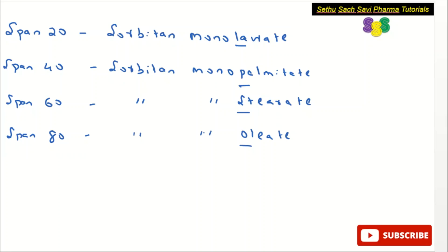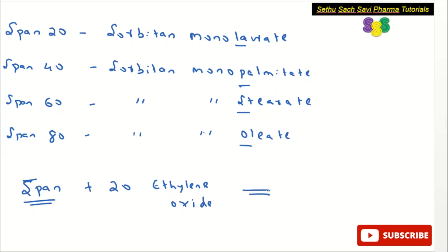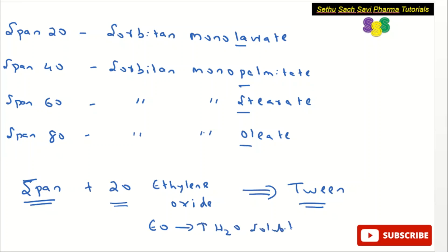Now, coming to the next non-ionic surfactant — tweens. If you add 20 molecules of ethylene oxide to the span surfactant, it will become tween. So tween is nothing but the combination of span plus 20 molecules of ethylene oxide. When you add ethylene oxide, the water solubility will increase. Therefore, tweens are more water soluble compared to spans.